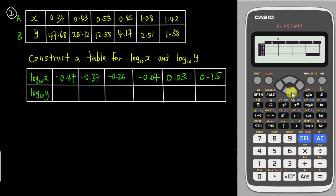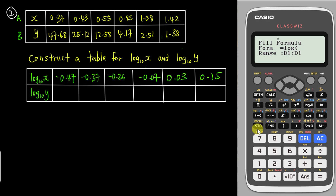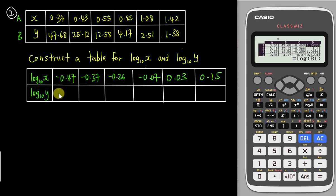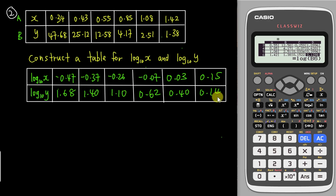Do the same for y. Go to option, Fill the Formula. The formula is log₁₀ of B — your y value is column B — so use Alpha B1. Set the range from D1 to D6, tap Enter, and the calculator gives all the values. Copy in two decimal places: 1.68, 1.40, 1.10, 0.62, 0.40, and 0.14.